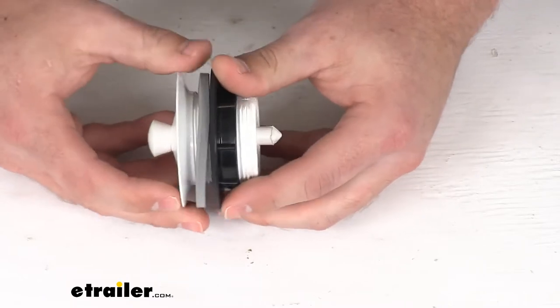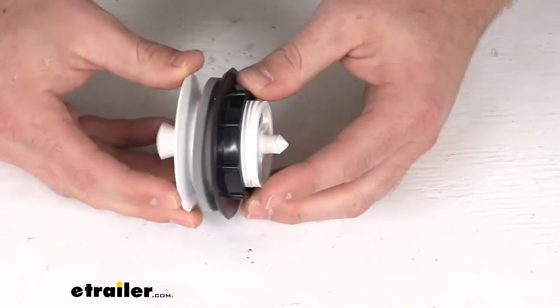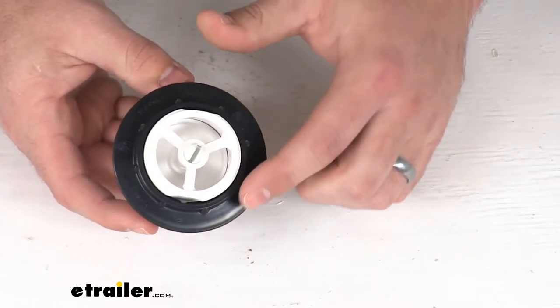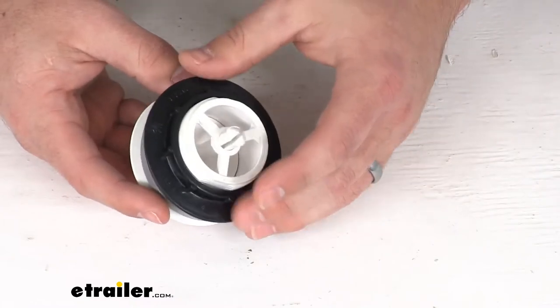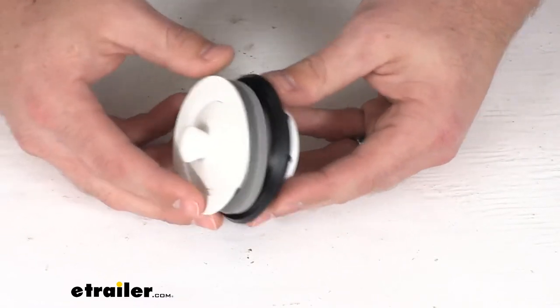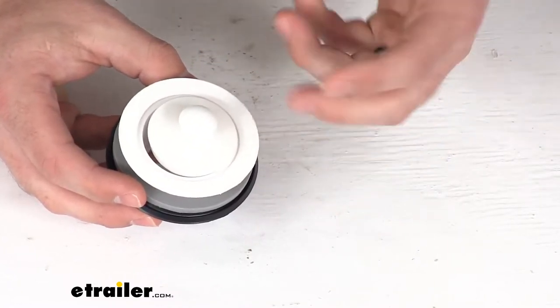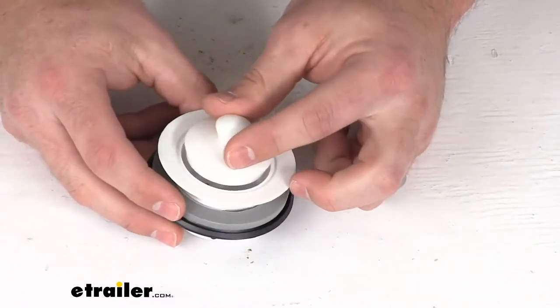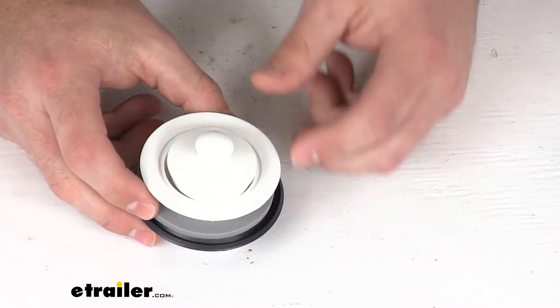This is constructed out of a durable plastic so it should hold up well for you. It does fit openings up to 2 inches in width so it should work for quite a few applications. It is a nice white color so it should remain looking clean and give you a nice finished look if you have a sink that is white.